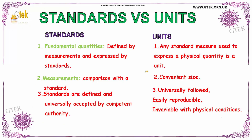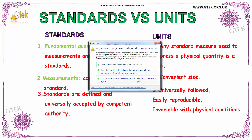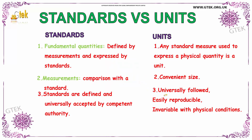We should understand about standards and units. The fundamental quantity is defined by measurements and expressed by standards. Measurements are a comparison with a standard. Standards are defined and universally accepted by competent authority. A unit is any standard measure used to express a physical quantity. It is of convenient size, universally followed, easily reproducible, and invariable with physical conditions.